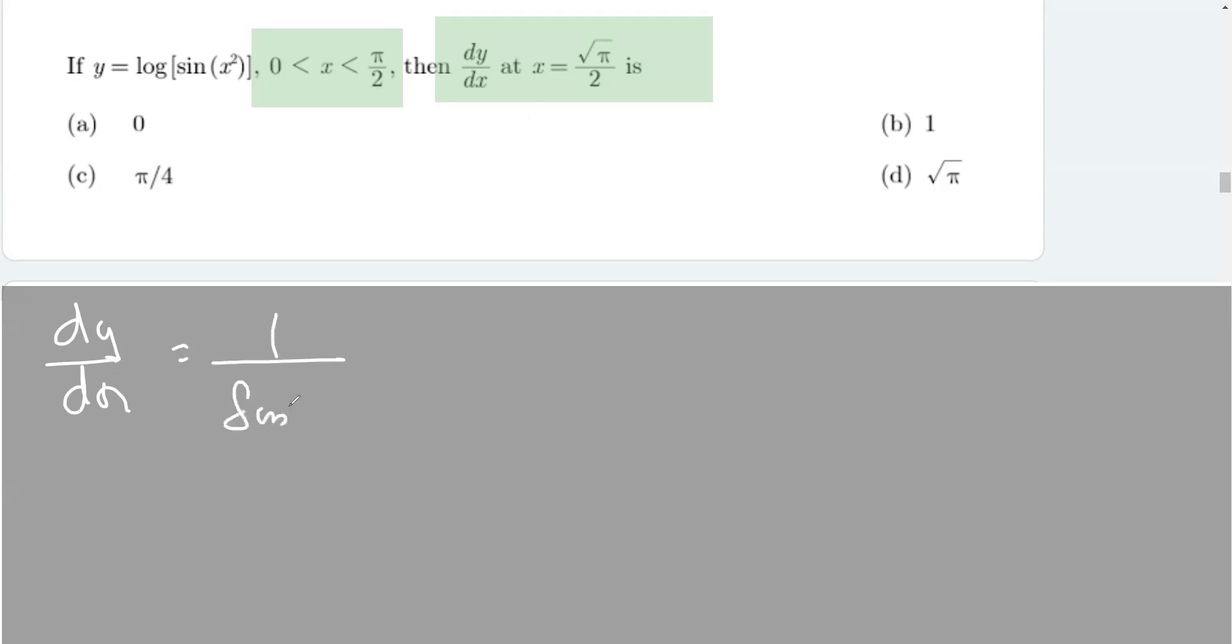It is 1 by sin x squared, and the derivative of sin x squared... Sorry, sin x derivative is cos x where the argument is x squared, and applying the chain rule, this is 2x.